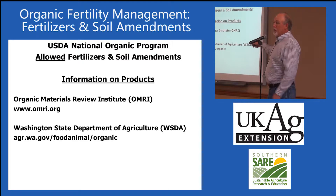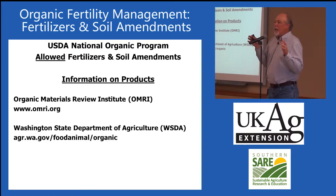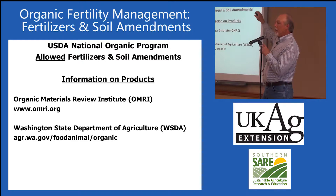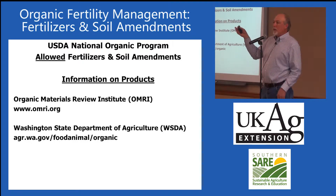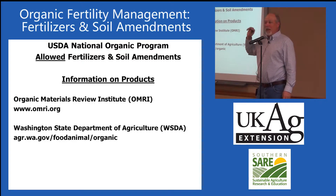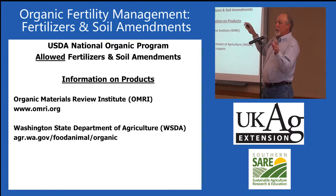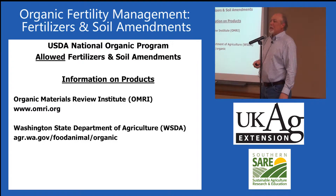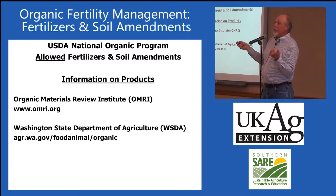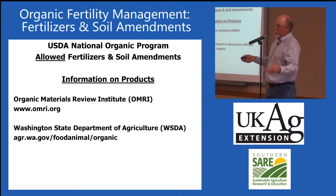Not every single product needs one of these labels to be allowed in organic — there are exceptions. Some manufacturers don't want to deal with that bureaucracy or submit their trade secrets. If you encounter that, you can get a manufacturer's letter statement of allowed use and submit that to the certifier. For your research toolbox, key regional sources include Seven Springs Farm in Virginia and Lancaster Ag Products in Pennsylvania — kind of like a catalog of everything, available online or in print.